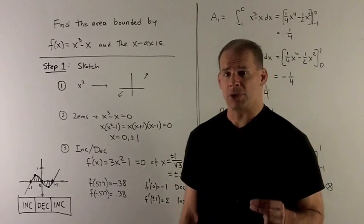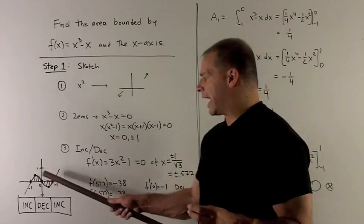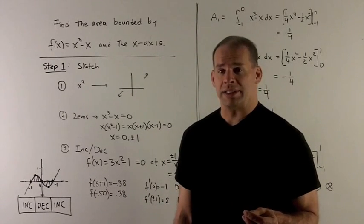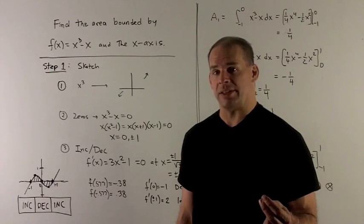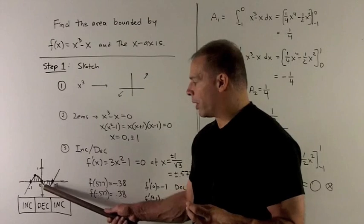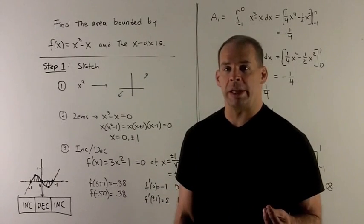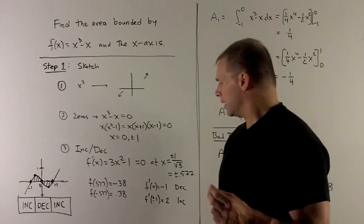The fundamental theorem of calculus is going to tell me if we're above the x-axis, I can get the area by taking an anti-derivative, evaluating at the endpoints, and then take the difference. If it's below the x-axis, if I want the area, same recipe, but then I change the sign.